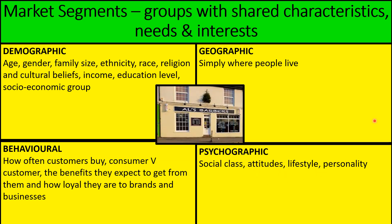Looking at the next example, I've got Al's Barber in Hailsham. Al's Barber does men's hair, so we are segmenting on gender. We are also segmenting geographically, because if I'm in London I'm not going to travel down to Hailsham to get my hair done. He is splitting the market up geographically — he wants people who live in Hailsham and around the outskirts of it.